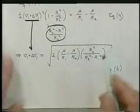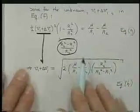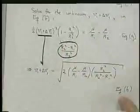And there's the 2, and then we take the square root of everything in order to get rid of the square, and so we get now the solution for V1 plus delta V1.